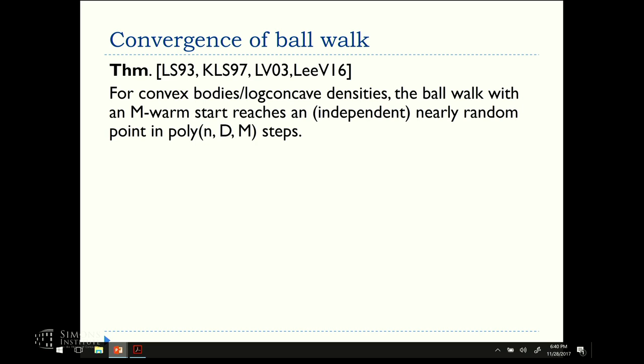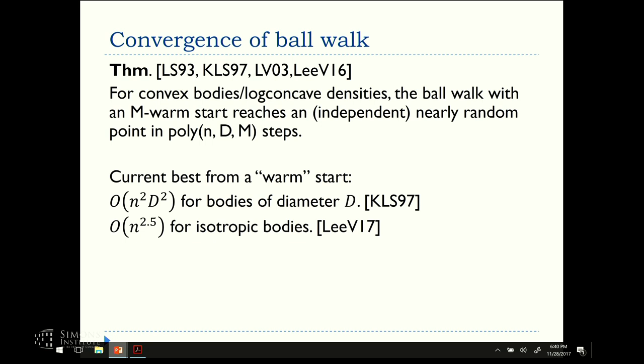Now the question is how many steps? Each step is a membership. So if it were a polytope, it would take order MN. So the theorem for convergence is that it's polynomial in the dimension, the diameter, and how close is the starting distribution to the target uniform distribution. Let's say that this distance is a constant. Then the result of Kannan, Lovas, and Simonovits from 97, already says that the number of steps you need is N-squared, D-squared. For isotropic bodies, which means that the covariance matrix is the identity, it's N to the 2.5, and if the Kannan Lovas-Simo's hyperplane conjecture is true, then the complexity would be N-squared.